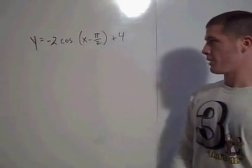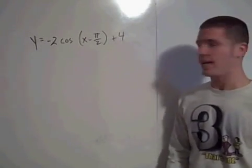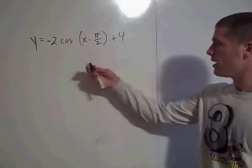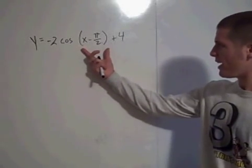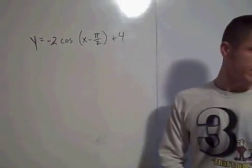Okay, so we're going to graph a funny-looking trig function. We have this function y equals negative 2 times the cosine of the quantity x minus pi halves plus 4. Okay, that's sort of a lot to look at.